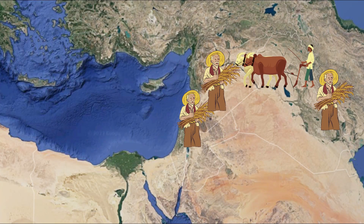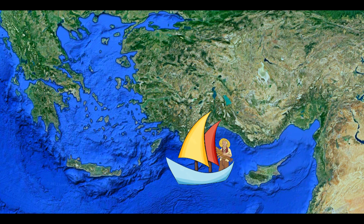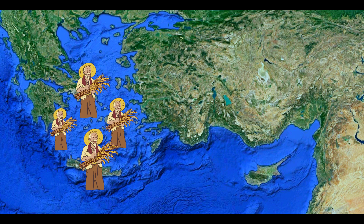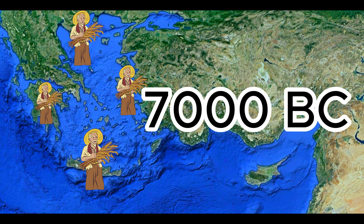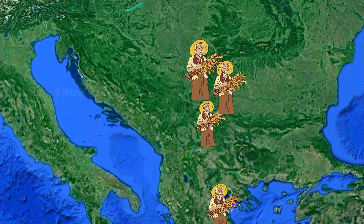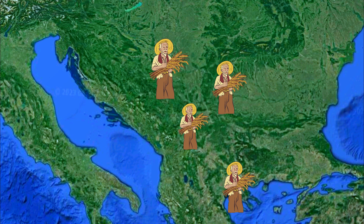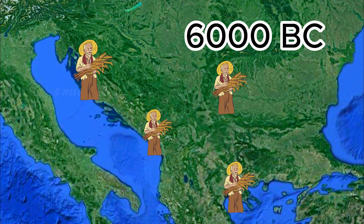Agriculture came from the area of the Fertile Crescent. From the Fertile Crescent, it came to Europe by ships and reached Crete and the Greek islands in the Aegean Sea around 7000 BC. Then it reached the Greek mainland and crossed the Vardar River valley to come to the center of the Balkans.